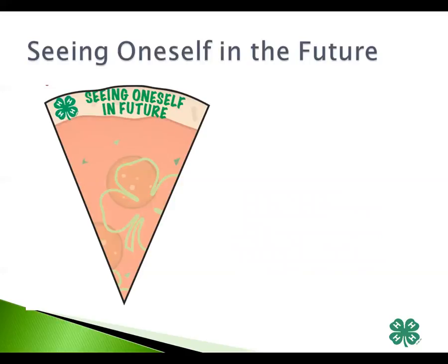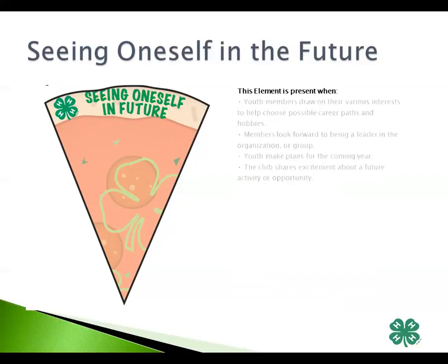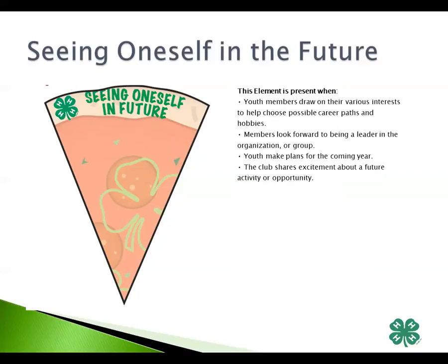Seeing oneself in the future. The ability to see oneself in the future is to have hope and optimism to shape life's choices to facilitate the transition into participating in the future. We see this element present when youth members draw on their various interests to help choose possible career paths and hobbies, members look forward to being a leader in the organization, youth make plans for the upcoming year, and the club shares excitement about a future activity or opportunity.